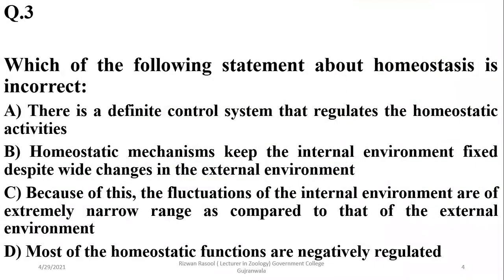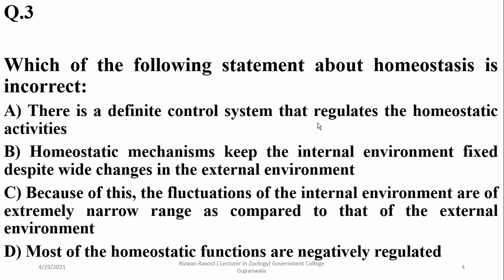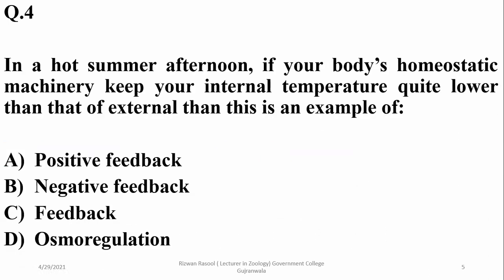Question: which of the following statements about homeostasis is incorrect? There is a definite control system that regulates homeostatic activities — that is a correct statement. Homeostatic mechanisms keep the internal environment fixed — no, they do not maintain a fixed environment; they maintain it within a narrow range. The fluctuations are extremely narrow, and most homeostatic functions are negatively regulated. So beta is the right answer — it is a wrong statement.